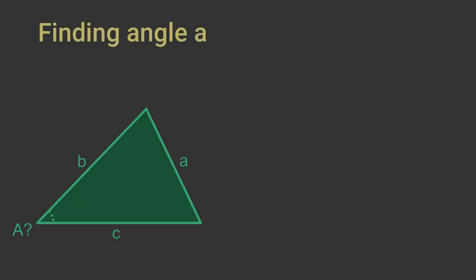If we know three sides, a, b and c, we can find the angle A. We need to rearrange the formula to find cosine A. Here is the standard formula. Here it is rearranged. If we know cosine A, we can use the calculator inverse cosine function to find A.